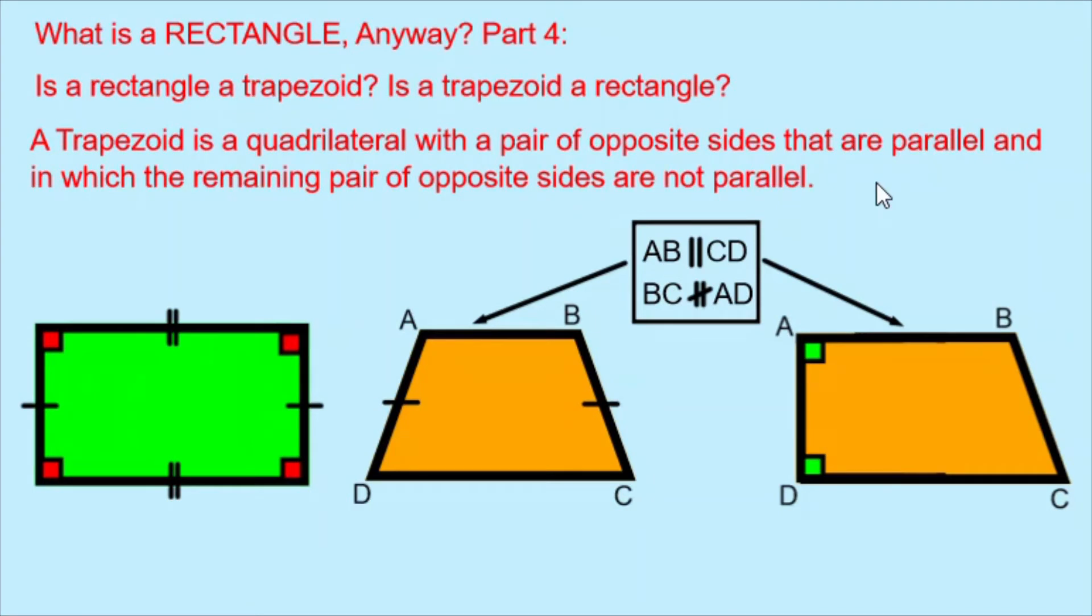Therefore, when you're looking at the information in this video, you have to check the definition in your local curriculum of a trapezoid in order to find out if these facts apply or not. My rectangle does not qualify as a trapezoid by this definition because while it certainly has a pair of opposite sides that are parallel, the remaining pair of opposite sides will also be parallel. It cannot be a trapezoid.